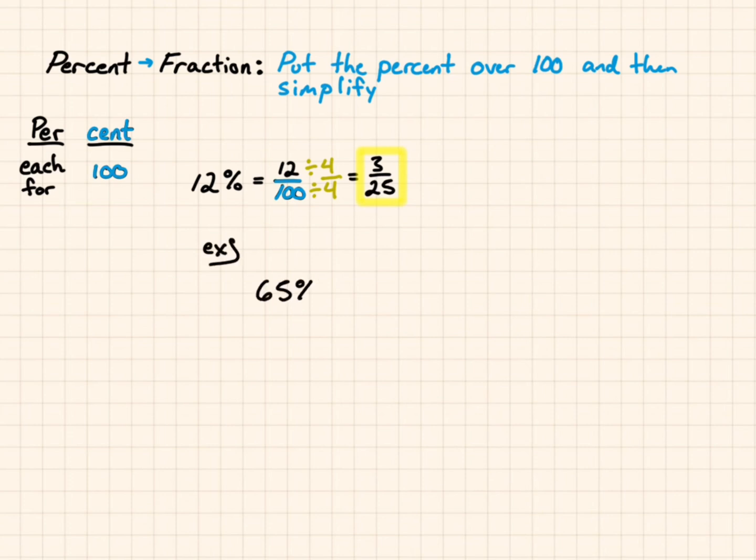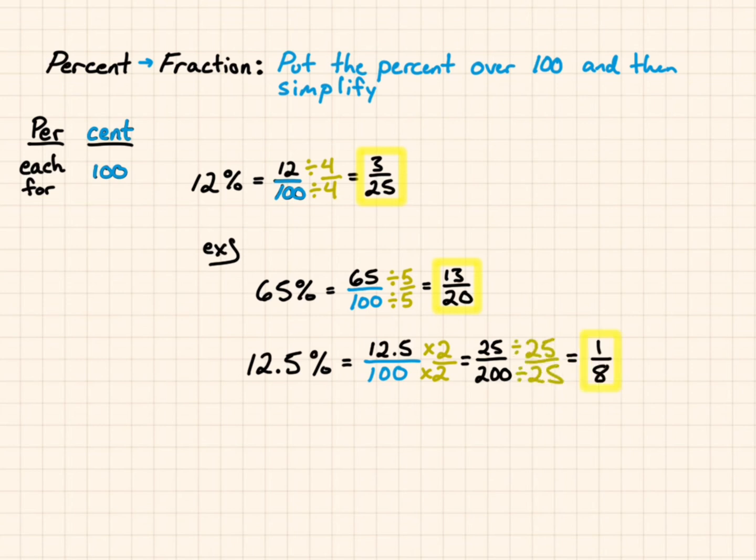Let's try another example. 65%. I put it over 100 and divide both of them by 5. I get 13 over 20. 12.5%. Now I have 12.5 over 100. I do not want a decimal in the numerator. I'm going to multiply both by 2, because I know 12.5 times 2 gives me 25. And then 25 and 200 are both divisible by 25. I end up with 1/8.